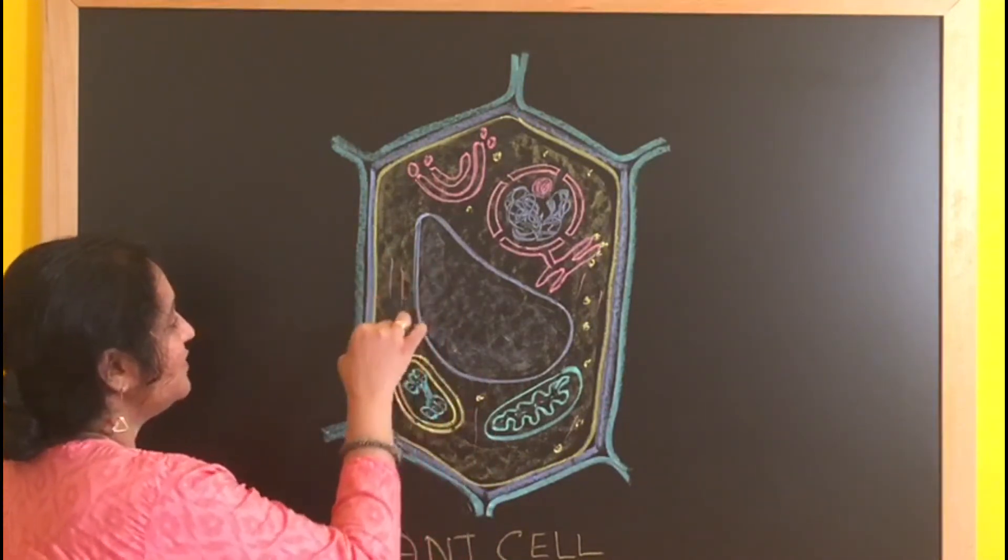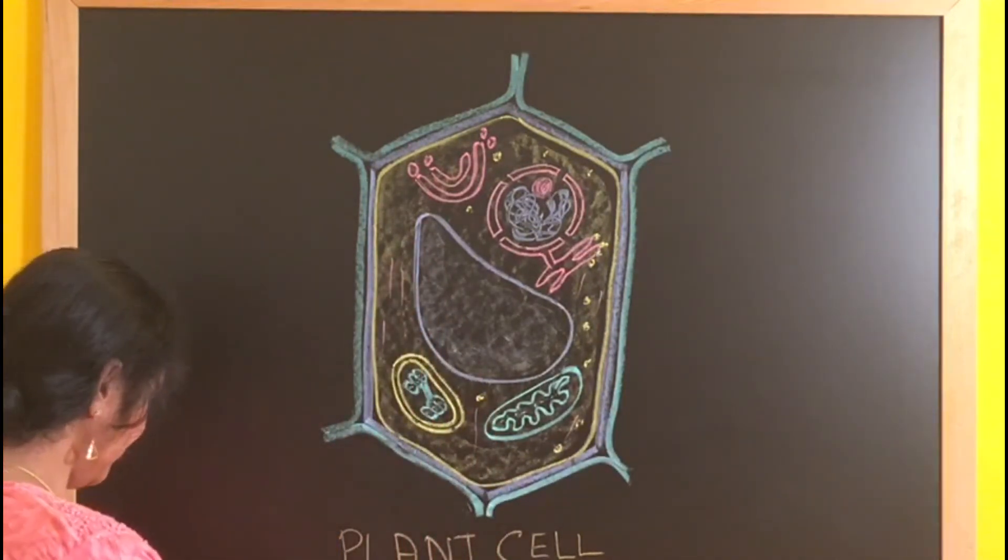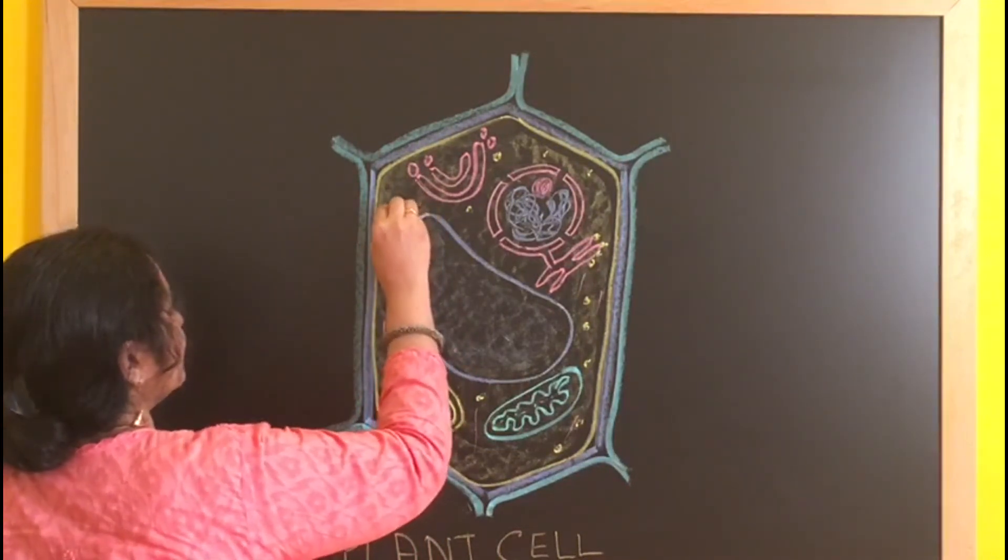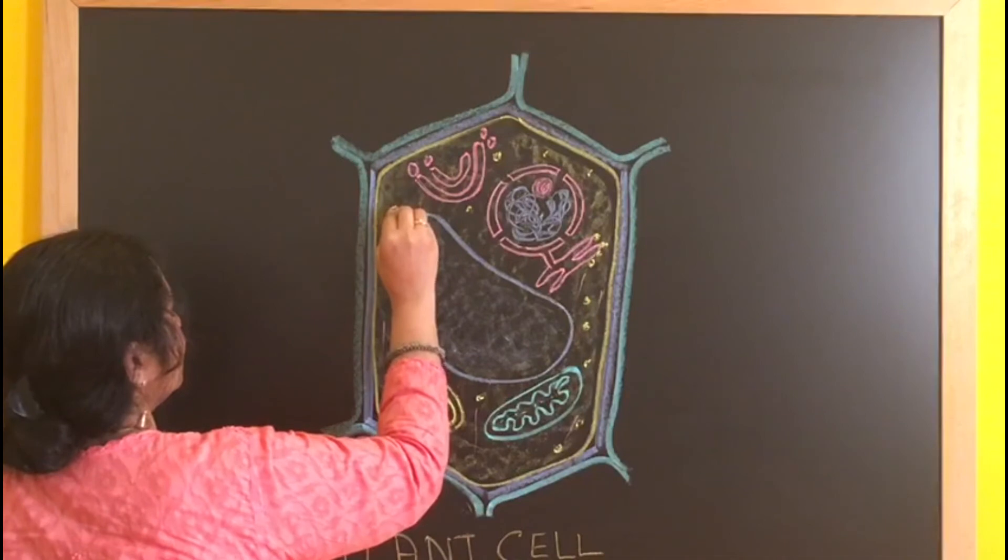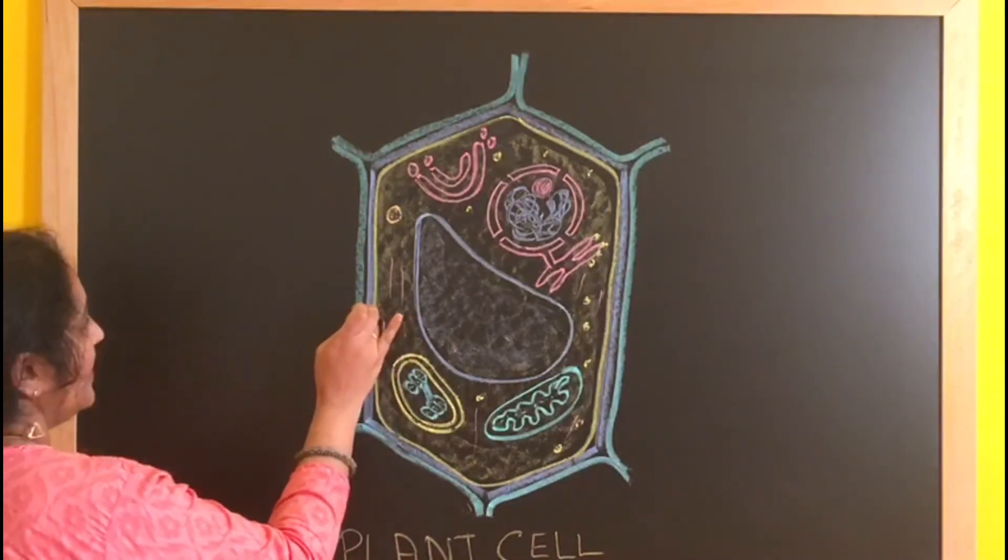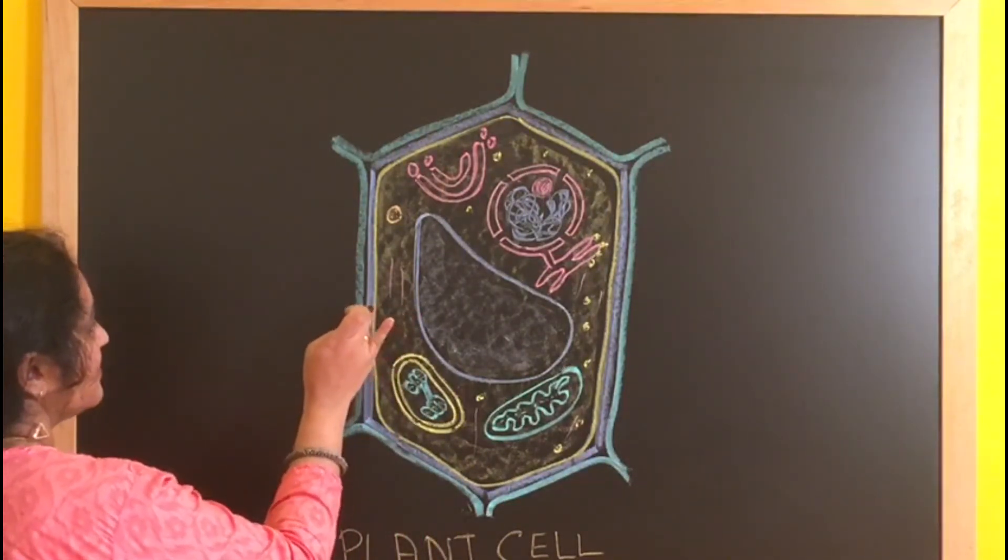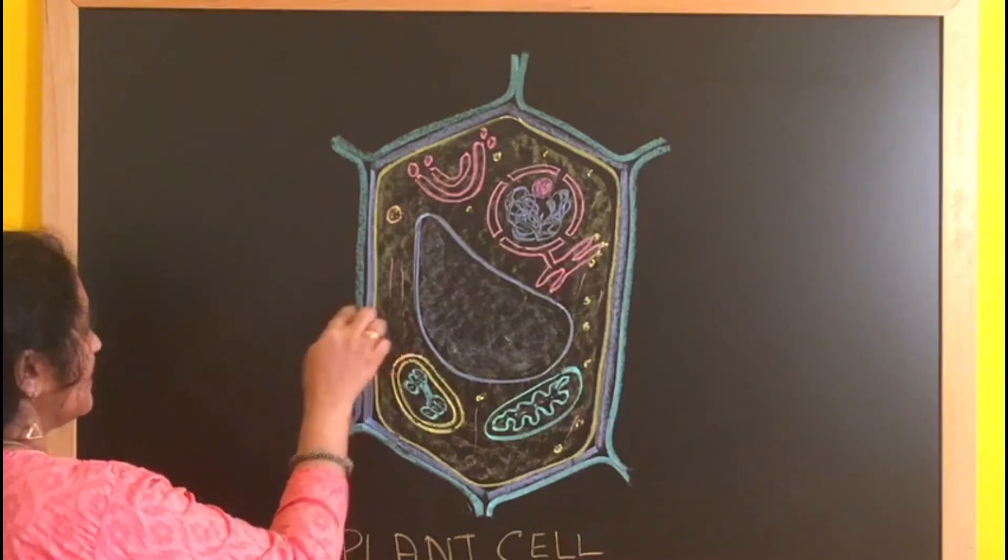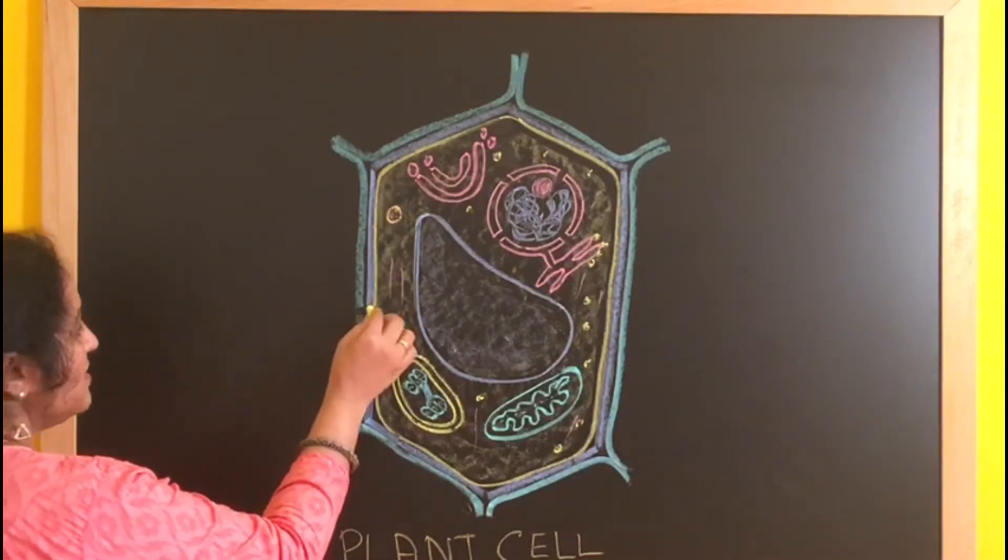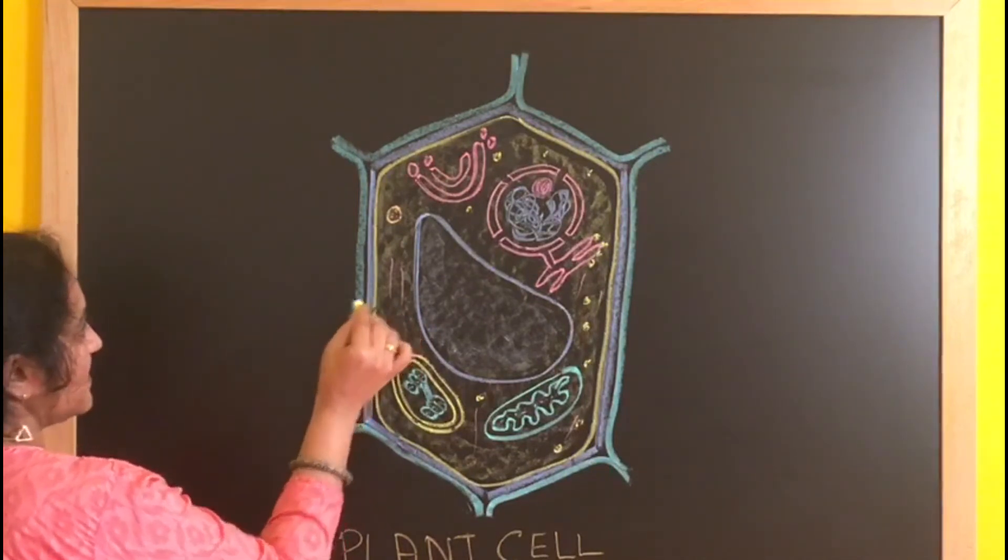These are the microtubules which form the cytoskeleton. And there will be some connections with the cytoplasm of one cell with another. So these connections are called plasmodesmata.